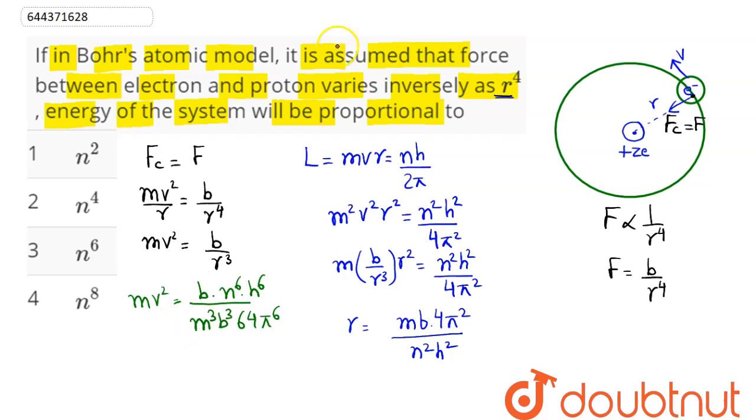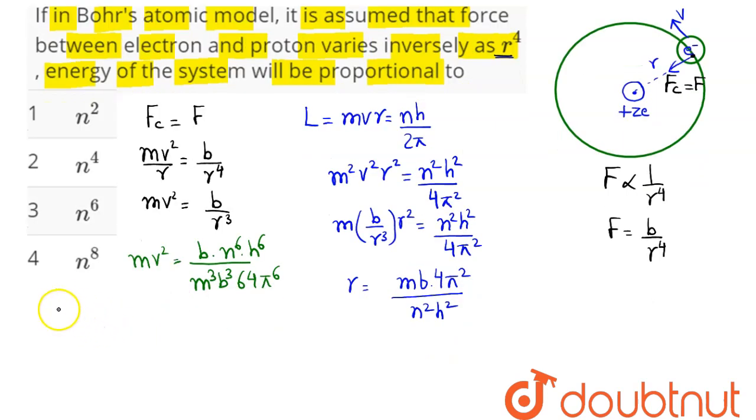So here we know the kinetic energy is given as half mv square, so the energy of this electron, half mv square, comes as n power 6 into some constant that is h power 6 in the denominator as 128 into b square into m cube into pi raised to power 6.